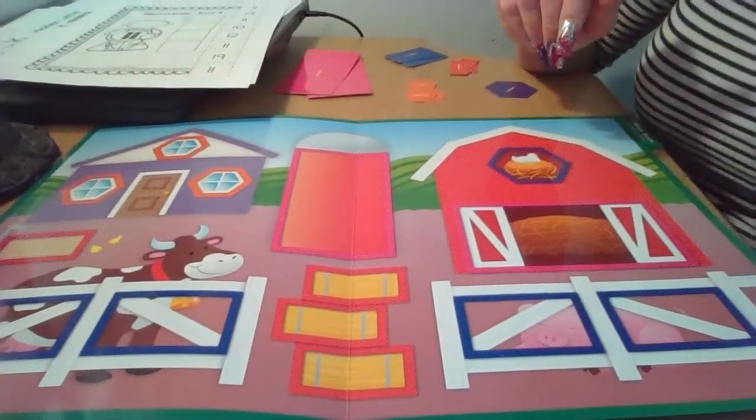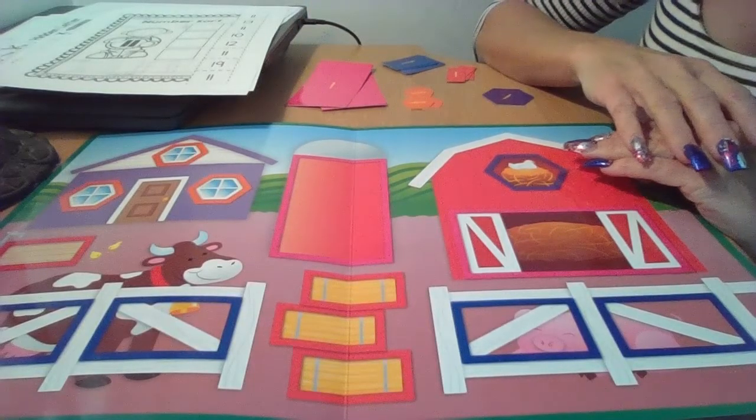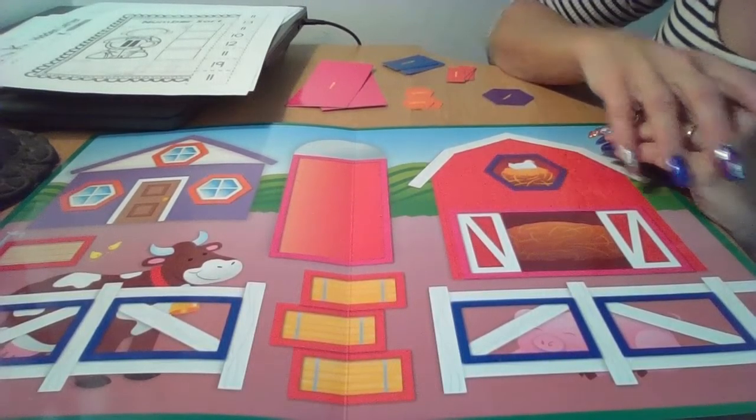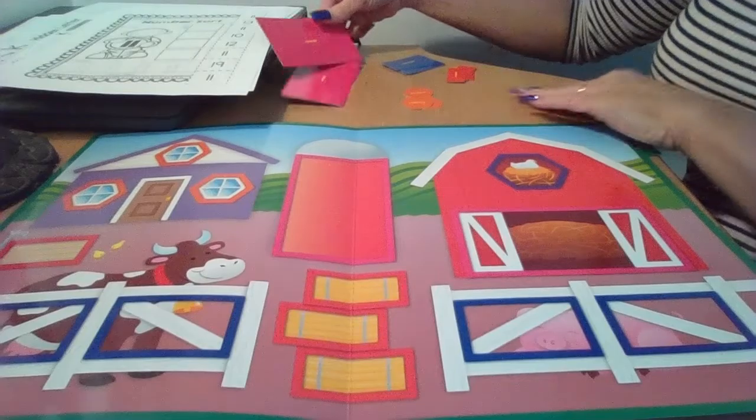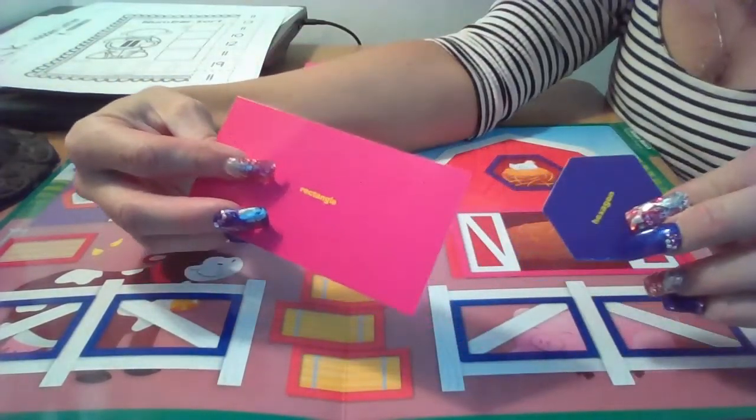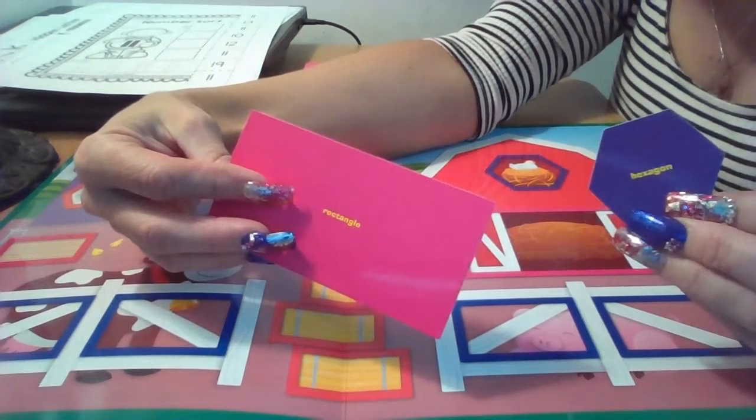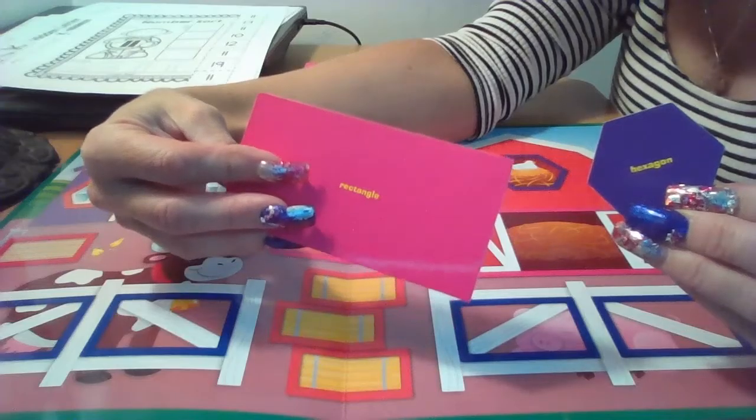It's kind of a game, kind of an activity, and it's reviewing the difference between rectangles and hexagons. I'm going to show you the two different shapes. I want someone to tell me which of these is a rectangle and which of these is a hexagon. Okay. Jackson, what do you think?